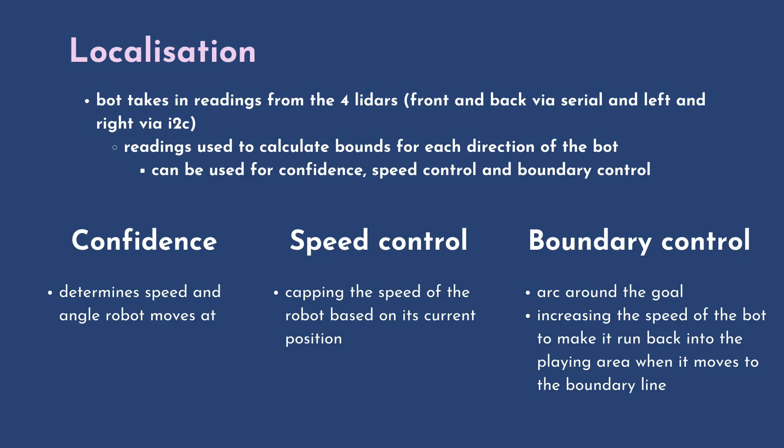Besides the move to point function, the readings can also be used to calibrate the bounds for each of the directions of the board. This function is later used for confidence, speed control and boundary control. Confidence allows us to determine the speed and the angle the robot should run at. Speed control caps the speed of the robot based on its position and boundary control pushes the robot back into the playing field when it is on the boundary lines.